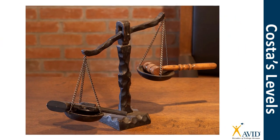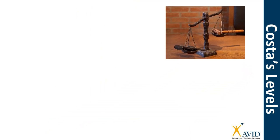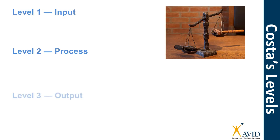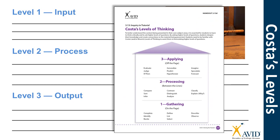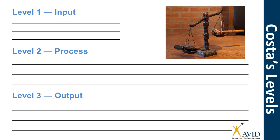Now it's your turn. Come up with a level one, two, and three question for this picture. In the picture we see a scale. On one side of the scale there's a gavel, which is used by a judge in a courtroom. On the other side is a gun. Take a moment to look at this photograph and see what you think it means. Now let's move the photo aside and come up with some questions. In your Cornell notes, write a level one, two, and three question about this photograph. Use your Costa's Levels of Thinking handout to help you choose appropriate words. Feel free to pause the video while you come up with your responses.